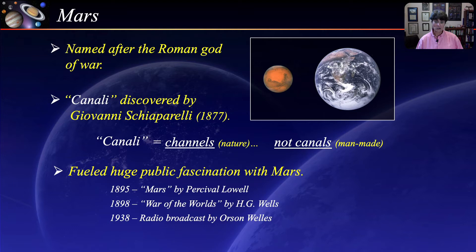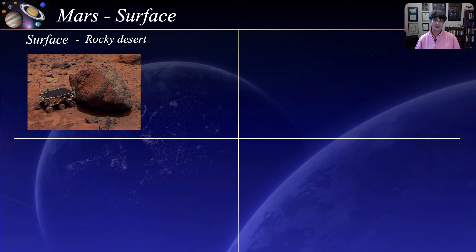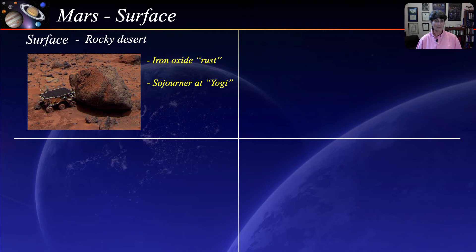With advances in telescopes, it became clear that Mars is actually a very inhospitable planet. Nevertheless, a series of spacecraft explorers and rovers have been sent to Mars to collect data to determine if conditions can support life. From various missions, we know that the surface on Mars is like a rocky desert, with its rusty reddish color due to iron oxide. This is a picture of the rover Sojourner on the surface of Mars taking a sample from Yogi, the large rock, taken by the stationary Pathfinder Lander in 1997.